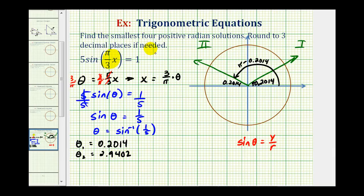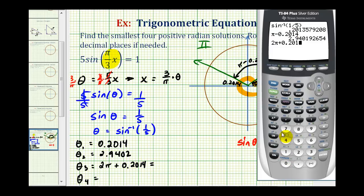Because we're looking for the four smallest positive radian solutions, we need to find two more solutions here, which means the next two solutions would be coterminal with these two angles. So for θ₃, we would have 2π + 0.2014, which will be approximately 6.4846.